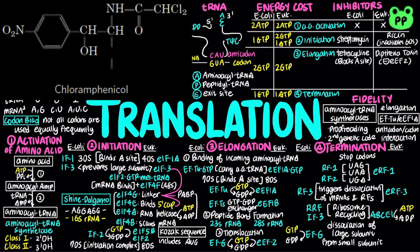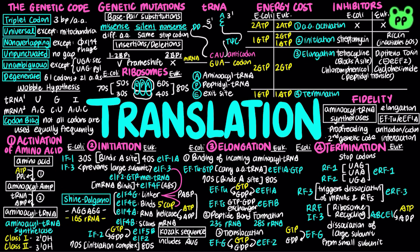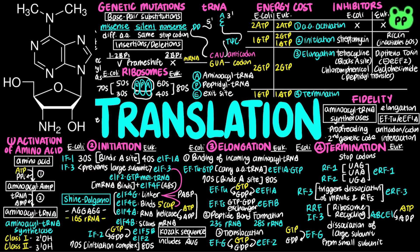Chloramphenicol can block peptidyltransferase of the 70S subunit, inhibiting peptide bond formation in bacteria, mitochondria, and chloroplasts, whereas cycloheximide blocks peptidyltransferase activity of the 80S eukaryotic ribosome. Puromycin resembles the 3' end of aminoacyl tRNA and binds the ribosomal A site. Puromycin participates in peptide bond formation but does not engage in translocation, terminating polypeptide synthesis in both bacteria and eukaryotes.